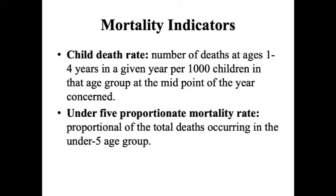Child death rate is the number of deaths at ages 1 to 4 years in a given year per 1000 children in that age group at the midpoint of the year concerned. For example, when calculating the child death rate of 2018, we look at the number of deaths from ages 1 to 4 per 1000 total population aged 1 to 4 years as of 1st July 2018.